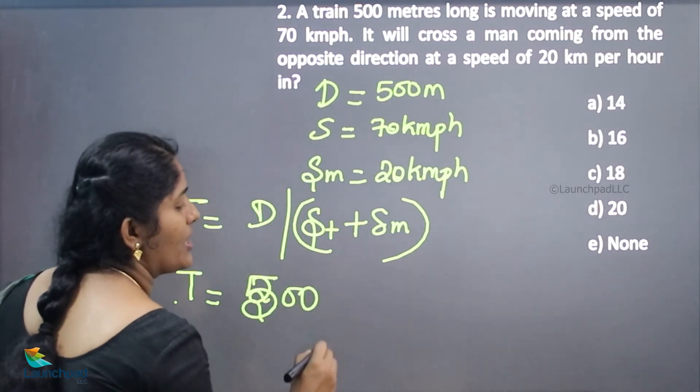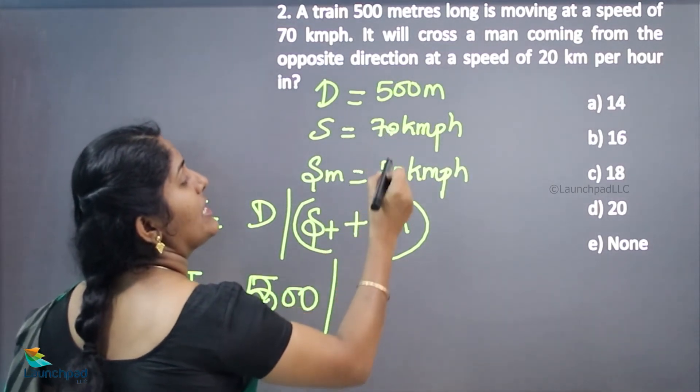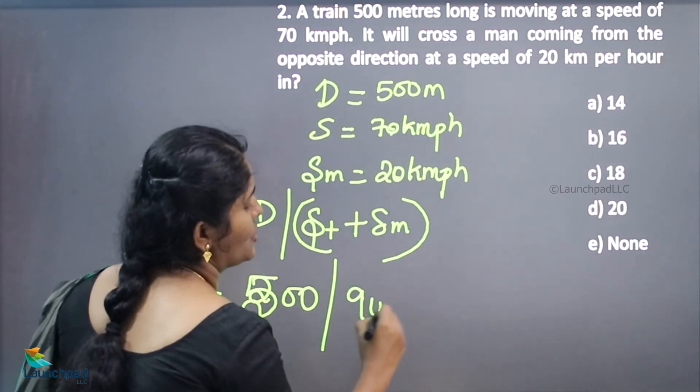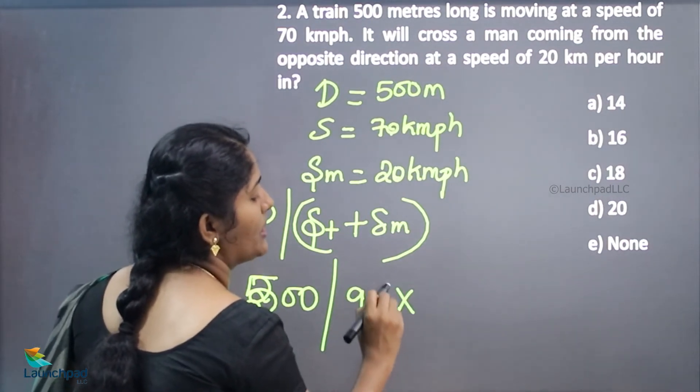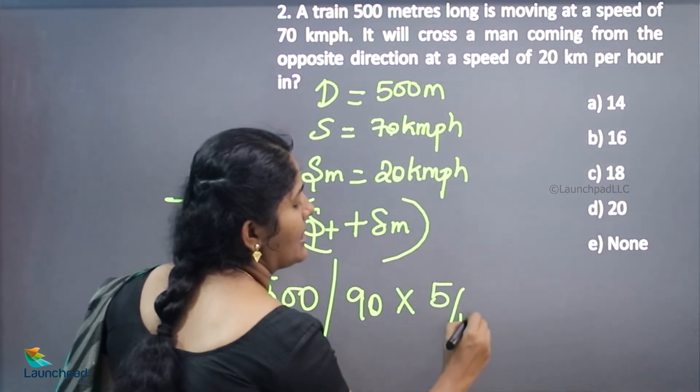The speed is 70 plus 20, which equals 90. We should convert this 90 kilometers per hour into meters per second.